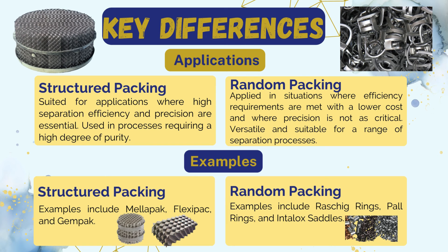Random packing is versatile and suitable for a large range of separation processes. The last key difference is in terms of examples: structured packing examples include Mellapak, Flexipac, and Gempak, while random packing examples include Raschig rings, Pall rings, Intalox saddles, and many more. To summarize, the choice between structured and random packing depends on the specific requirements of the separation process, including cost, efficiency, and the nature of the components being separated.